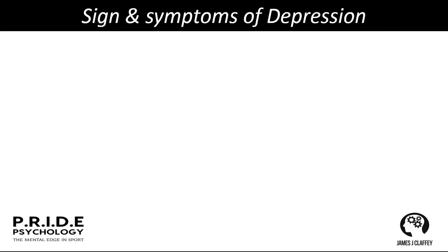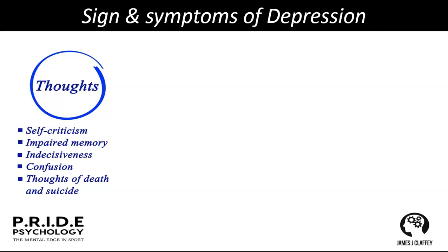Signs of depression: thoughts can be self-critical and memory can be impaired — memory needs concentration and attention. We can look at models like the working memory model of Baddeley and Hitch — short-term, long-term memory, phonological loops. Indecisiveness, confusion, and thoughts of death and suicide tend to be high. Our emotions are closely linked to our thoughts — in social psychology the James-Lange theory is important here.